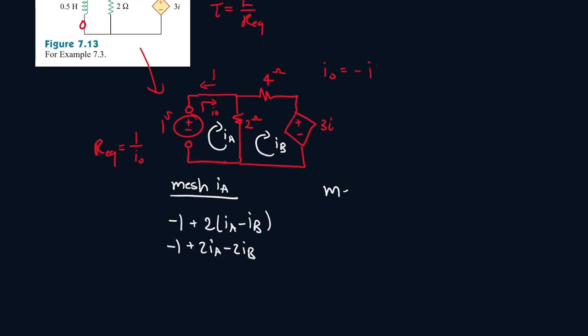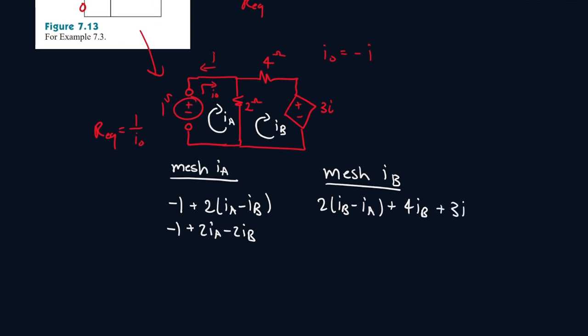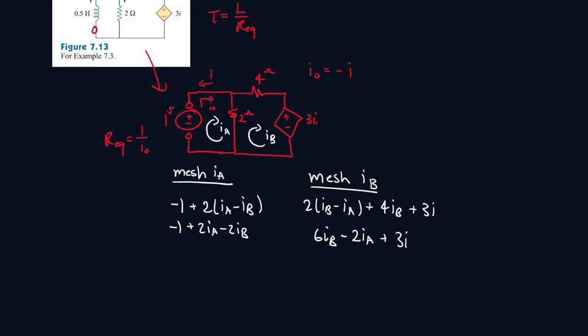Now, for mesh IB, it's 2IB minus IA plus 4IB plus 3I. So it will be 6IB minus 2IA plus 3I. Now, this I value, we have to substitute something in, because right now we have two equations with three unknowns.